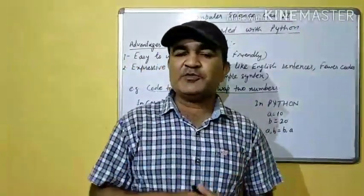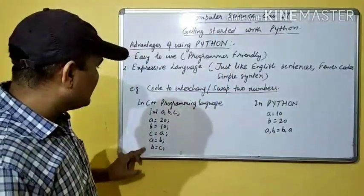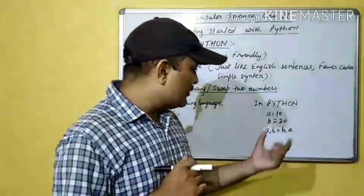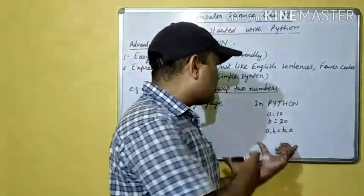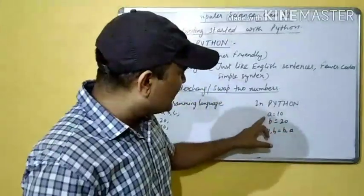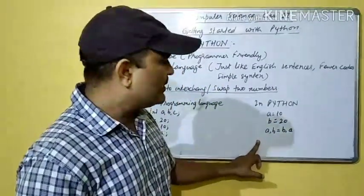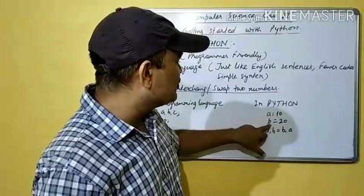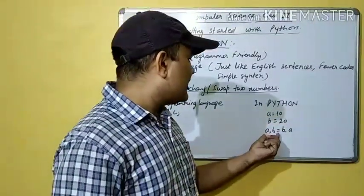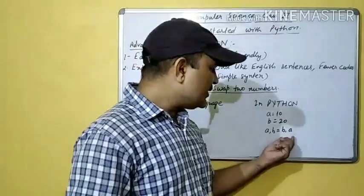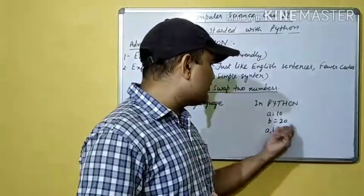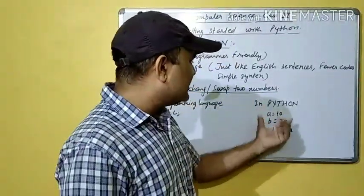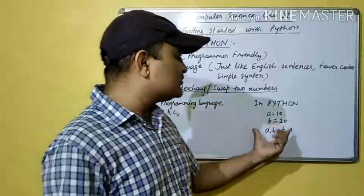So if we look at C++, we have to write so many lines — it is a little complex. But if we write the same program in Python, we only need three lines: a is equal to 10, b is equal to 20, and then a, b is equal to b, a. That means the a value becomes b and b becomes a. You can see how easy it is — written in Python in only three lines.